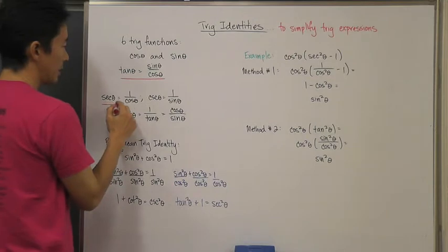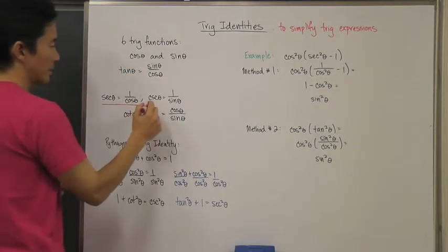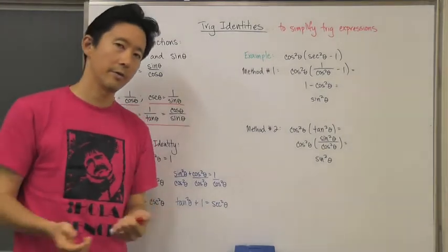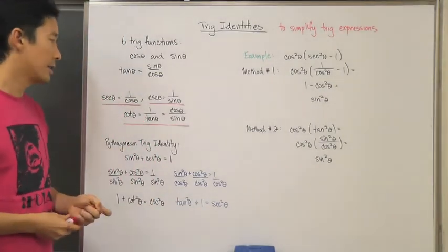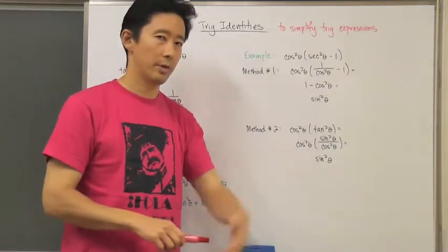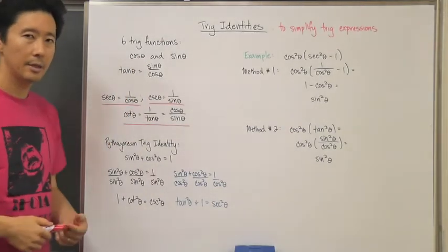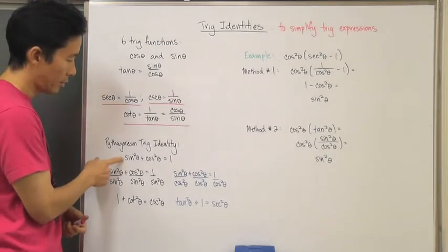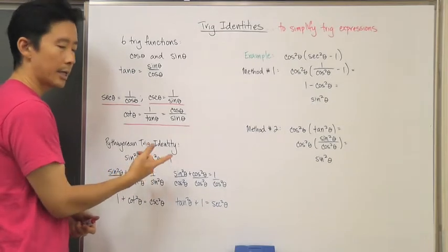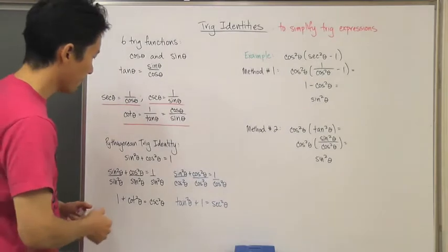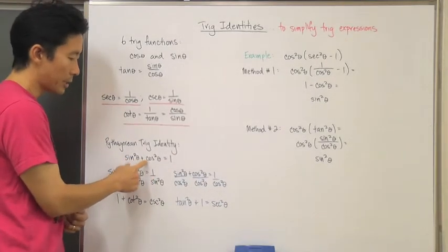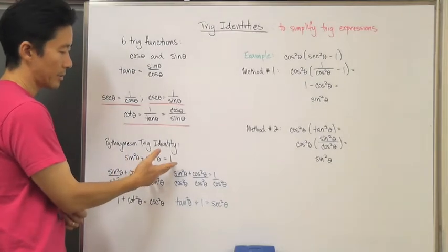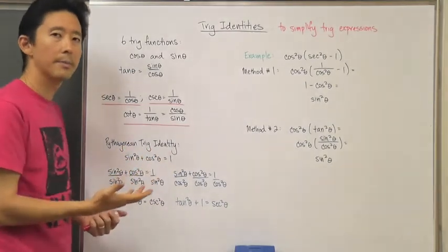Those are three additional trig function definitions that you need to recognize. These are definitions, not identities. The identities are here. The Pythagorean trig identity — which is sine squared theta plus cosine squared theta equals one — is always true because it is based upon the unit circle. Since this holds for any value of theta, we can always substitute one for sine squared plus cosine squared, or vice versa.